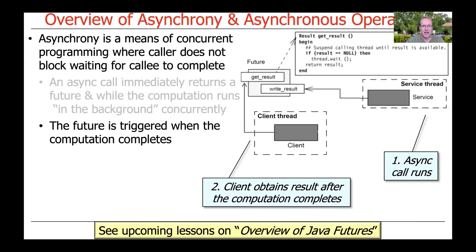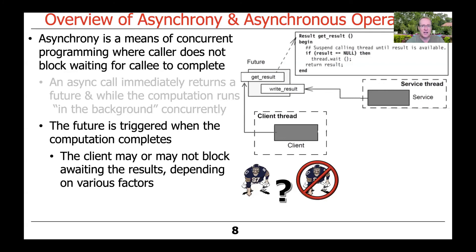We'll talk about how the caller can obtain the results later. The nice thing about this model is that the caller — the client — may or may not block waiting for the results, depending on various factors: does it really need the results to keep going, or can it do other things while the computation runs in the background? We'll discuss different ways of reclaiming results from the future using the asynchronous programming models that Java supports.